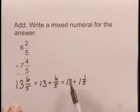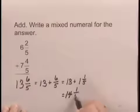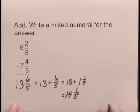Now, combining 13 plus 1, we have 14 and 1 fifth. And this is the mixed numeral form for the answer.